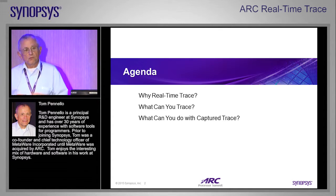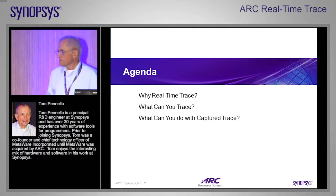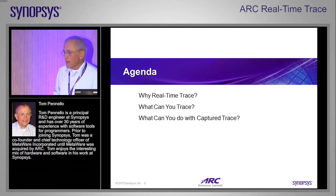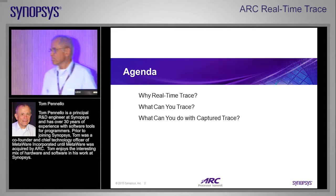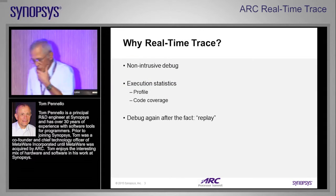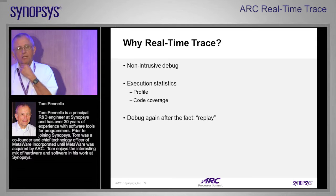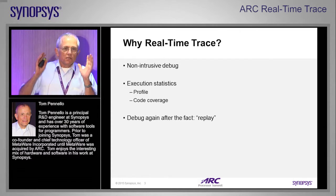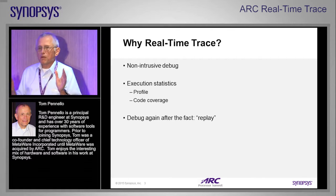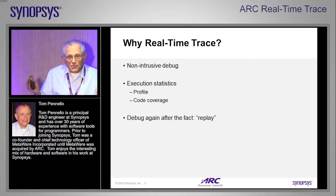I'll explain what we are capable of tracing in an ARC, as distinct from some other processors you may know. And then once you've acquired some trace, what can you do with it? So why real-time trace? It gives you the opportunity of non-intrusive debugging, where when your program goes awry, you can figure out how it went awry without changing the behavior.